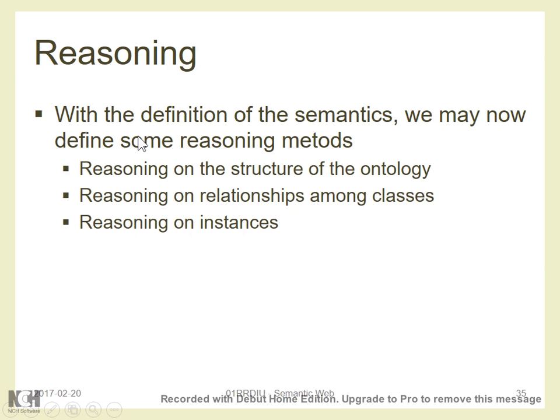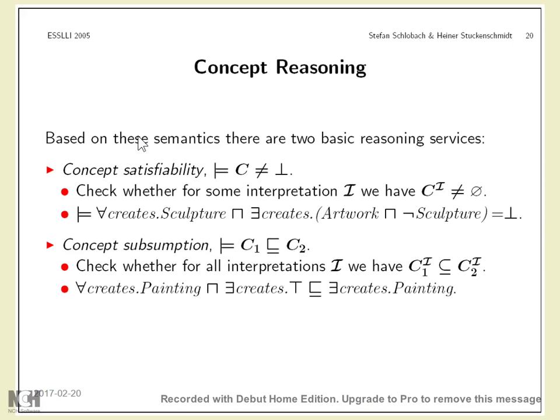With this formal model, what can we do? We can reason about the structure of the ontology — the hierarchy of classes — reason about the relationships and properties, and reason about the instances. In theory, this is what can be done in general description logic, though implementations are not always complete. So what kind of questions can we ask? The basic question is about concepts.